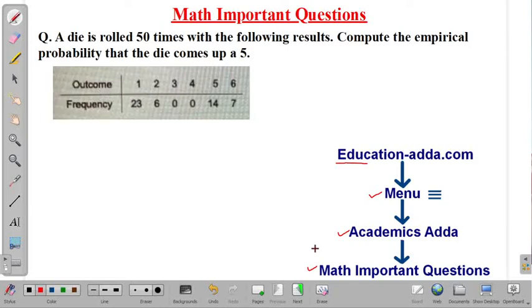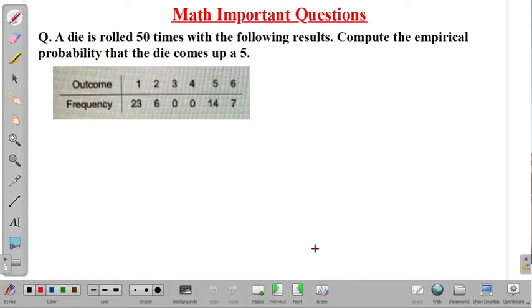Okay, so coming back to the given problem. What is given here? See, in this problem it is given that a die is rolled 50 times and its outcome is given in this table. And we need to compute probability that die comes up a 5. So how many times 5 is coming, we need to see, and then we can calculate the probability of coming 5.